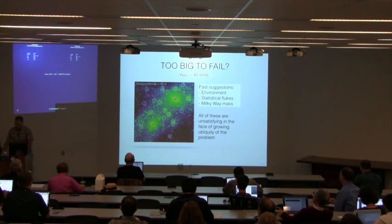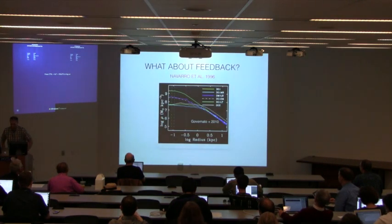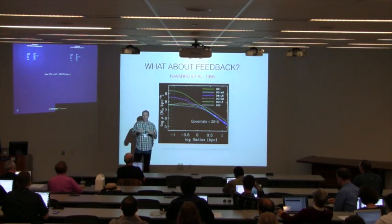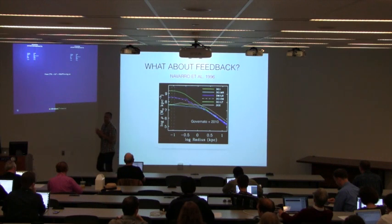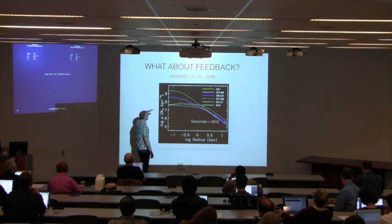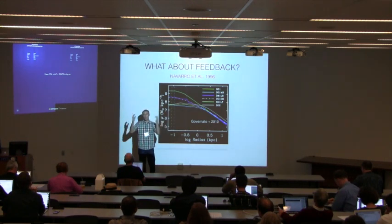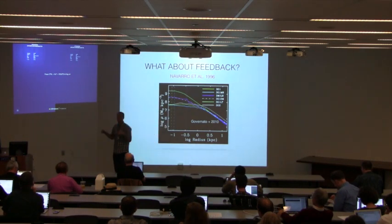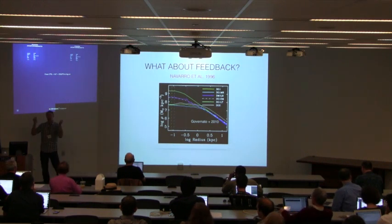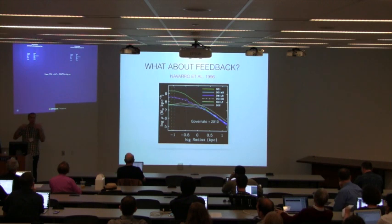That drives us back to the question of feedback — maybe it's an internal process, a property of all little galaxies that drives these densities low. These ideas have been around for a while. There's a nice paper by Governato et al. showing that if you blow lots of stuff out of the center of your dark matter halo, you basically shock the potential, evacuate the orbits of dark matter particles, and they don't go back — the density goes down.